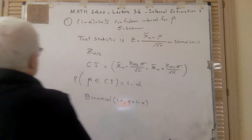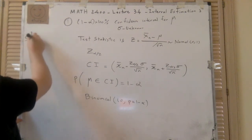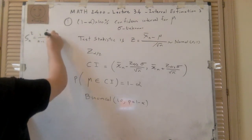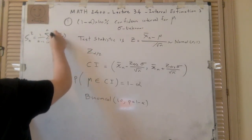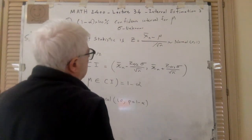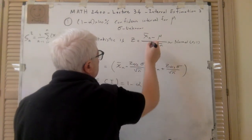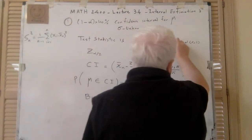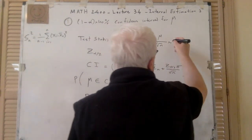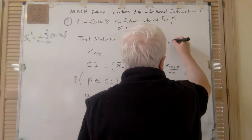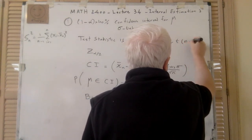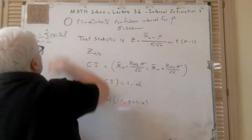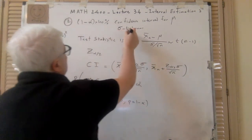Remember, S_N squared was (1 over N minus 1) times the sum from 1 to N of (X_i minus x̄_N) squared. So if I use S here, remember that gives a T-distribution with N minus 1 degrees of freedom. So that's number 2 — sigma unknown.